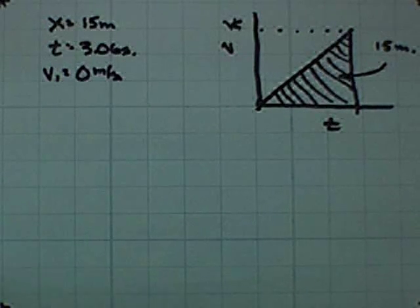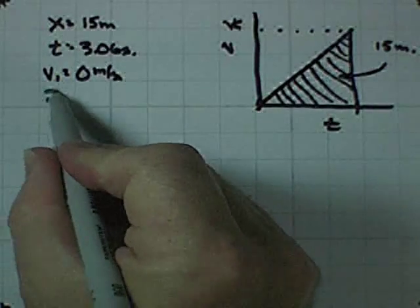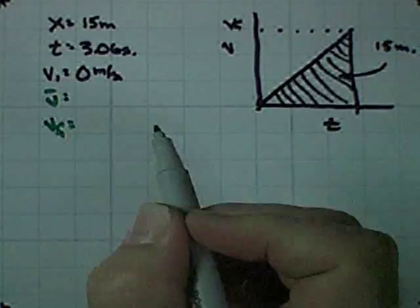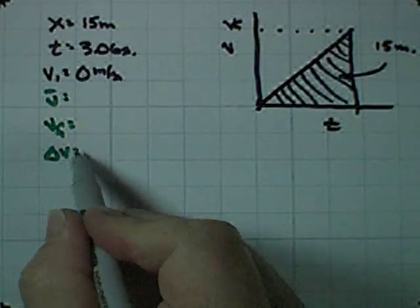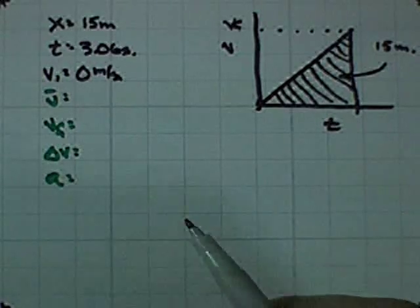There are a lot of techniques we could apply to try to find out the information we're asking. We're looking for average velocity, we want to know final velocity, change in velocity, and finally, acceleration.